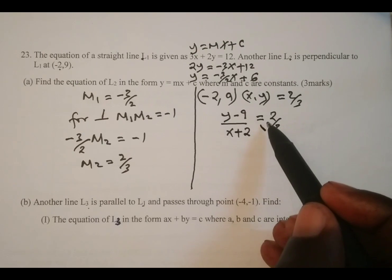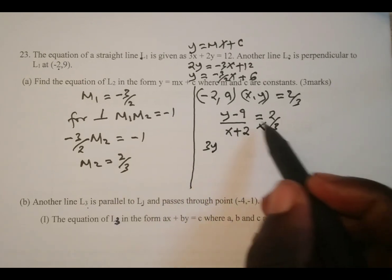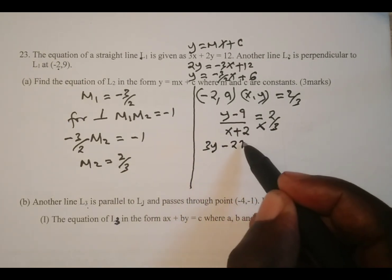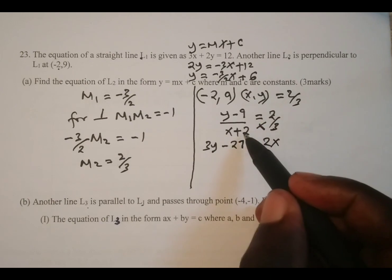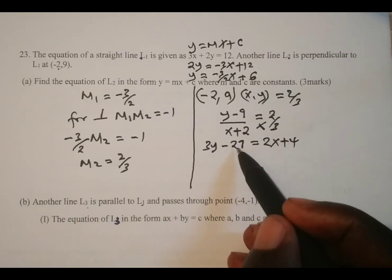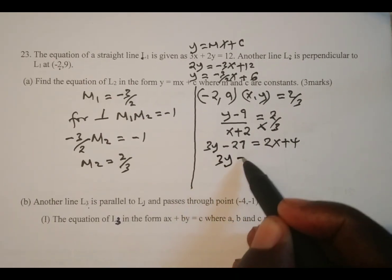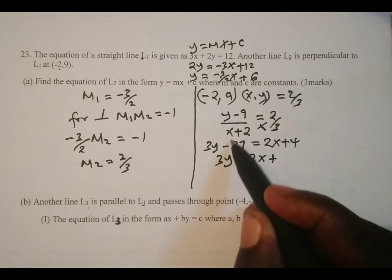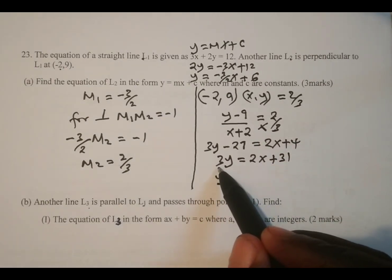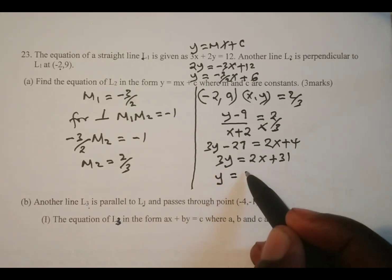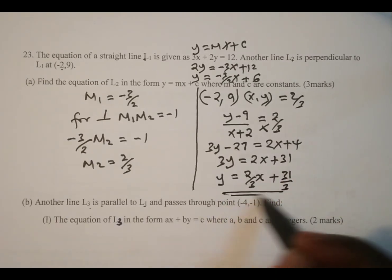We cross multiply: 3 times y minus 9 gives 3y minus 27, equal to 2 times x plus 2, giving 2x plus 4. Moving negative 27 to the other side gives 3y equal to 2x plus 31. Dividing all through by 3, y equals 2 over 3 times x plus 31 over 3. That is the answer to part A.